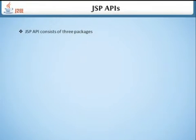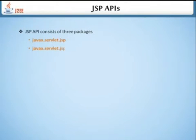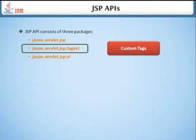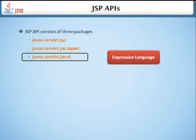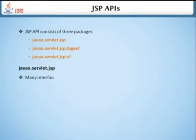JSP API consists of three packages: javax.servlet.jsp, javax.servlet.jsp.tags, and javax.servlet.jsp.el for expression language and custom tags. The javax.servlet.jsp package is mainly used for many interfaces and classes. Interfaces available in this package include JspPage.